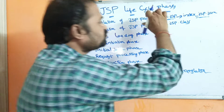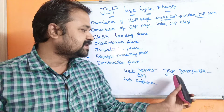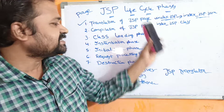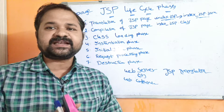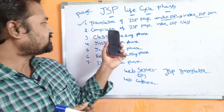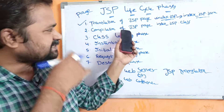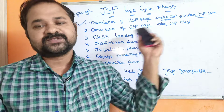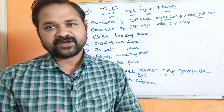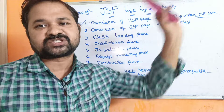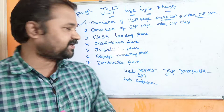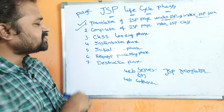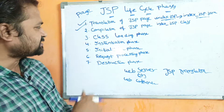These two steps — translation and compilation — are done internally. Translation is done internally by the JSP Translator, and compilation is done internally by the Java compiler. We do not need to perform those two activities manually. This is about the Compilation of JSP Pages.